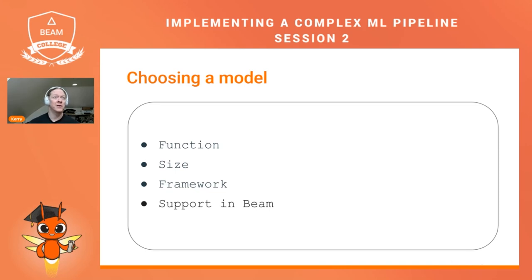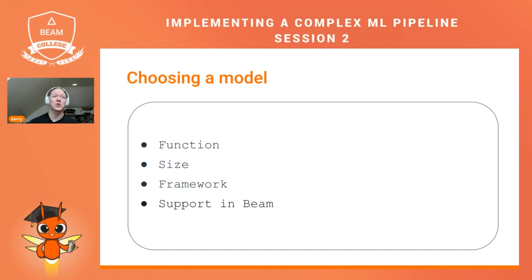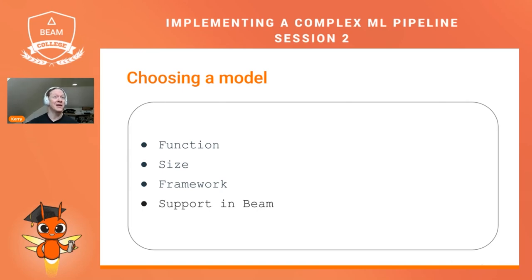You can also write a custom model handler if the pre-written model handlers don't serve your needs. Because we have that custom model handler option, we can literally support any kind of machine learning inference. A caveat here is that what Beam does not support well is model training. Beam is a tool for inference across your dataset or preparing a dataset — preparing the features you will use to train a model — but it's not very good at training a model, mostly because in Beam you're defining a directed acyclic graph, and training an ML model is essentially a cyclic process.